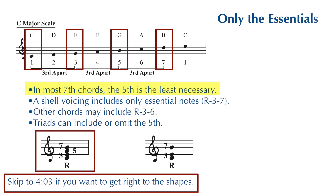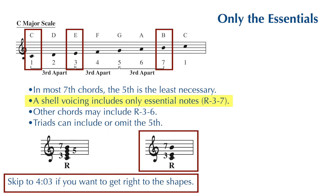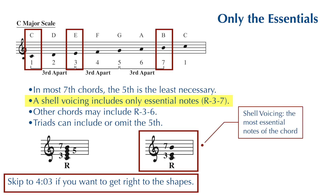Of all the notes in a seventh chord, the fifth is the least necessary. We can remove the fifth from a seventh chord and it still has the most essential notes. What we're left with is a shell voicing — the root, the third, and the seventh. Most shell voicings include the root, third, and seventh, but some will include other notes like a sixth instead of a seventh, and three types of chords in this video will include a fifth.